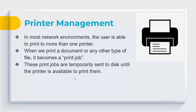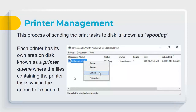In a network environment, users can often print to more than one printer. When a document is printed it becomes a print job. These jobs are temporarily sent to disk until the printer is available — a process called spooling. Each printer has its own area on disk called a printer queue, where print jobs wait. You can also pause, cancel, or restart jobs in the queue.